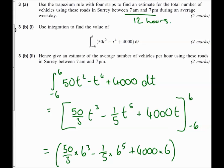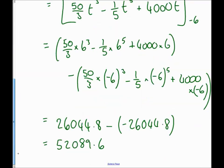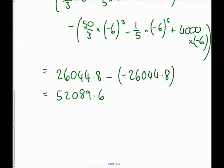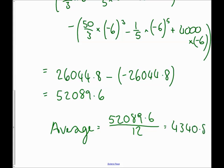There are 12 hours. To find the average number of vehicles, I'm going to do the total divided by the time. So I'm going to do my total number of vehicles, my average is equal to 52089.6 divided by my 12 hours, to find out there's 4340.8 vehicles per hour. So that's how we do integration with limits.